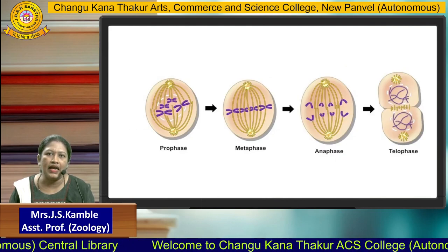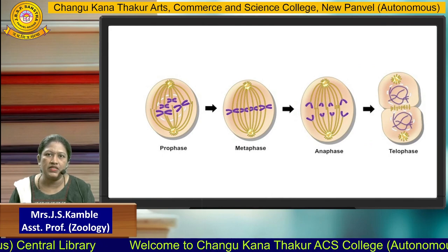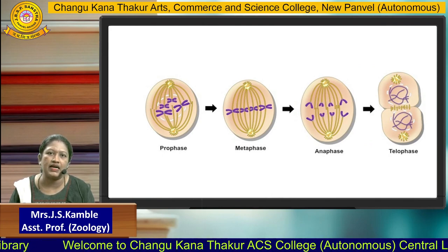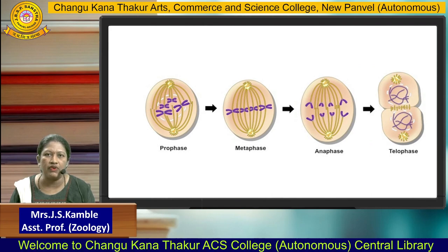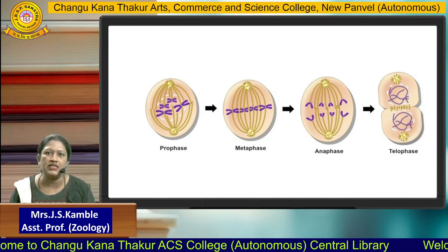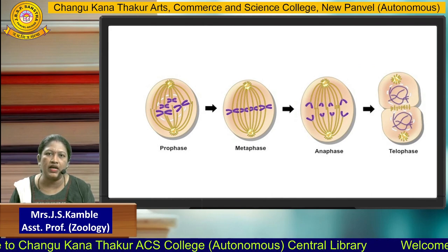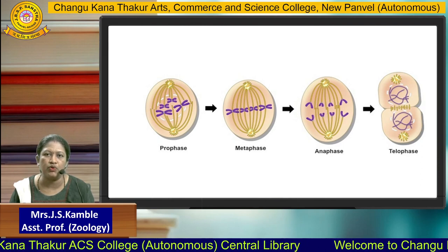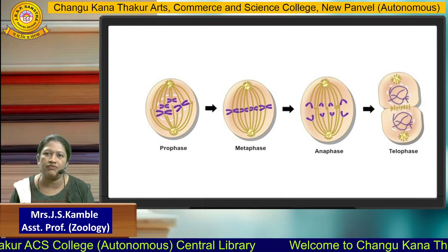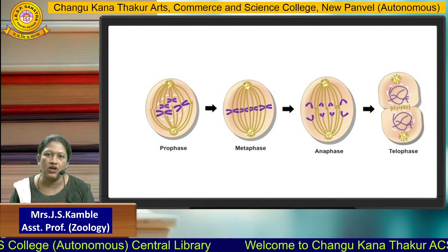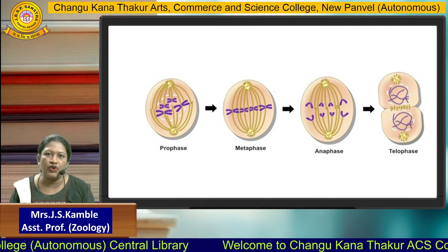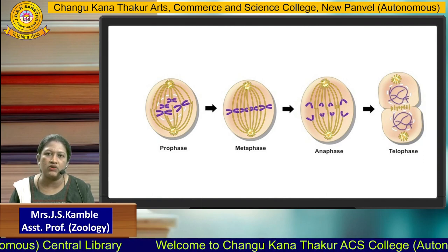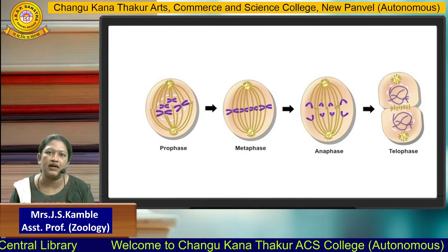At the end of telophase, two daughter cells are formed. In this way, mitosis is carried out with the help of four phases — prophase, metaphase, anaphase, and telophase. From a single parent cell, at the end of mitosis, two daughter cells are formed.